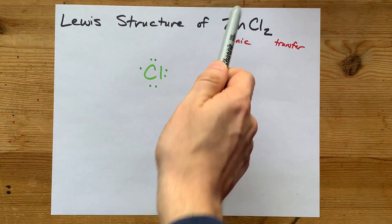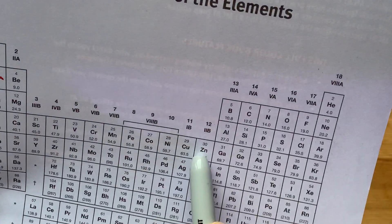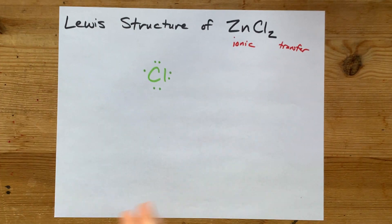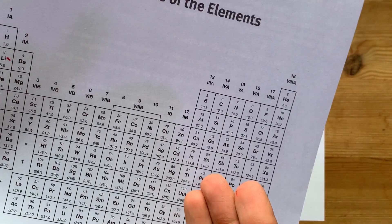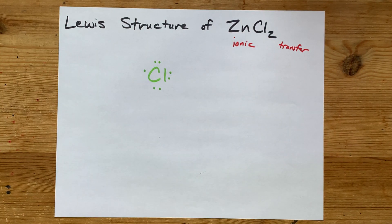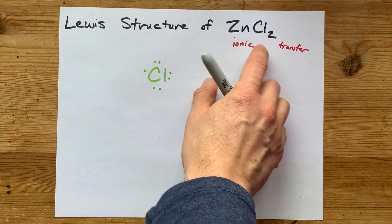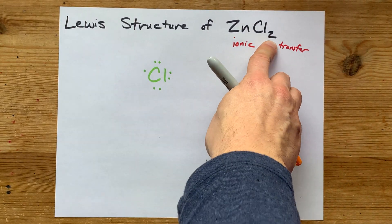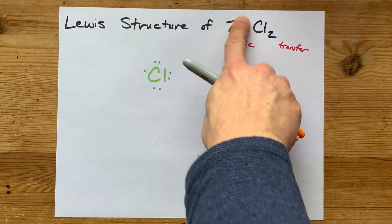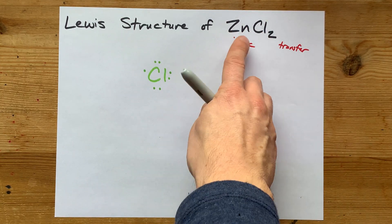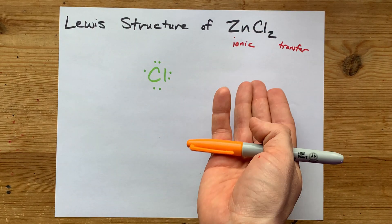Now I'm also going to draw zinc. Zinc wants a charge of plus two—I know that because zinc only ever has one charge and it's always plus two. But if you didn't know that, chlorine, being a halogen, wants a charge of minus one and there's two of them. So what charge does zinc need to cancel out two minuses? It needs two pluses, so it's plus two.